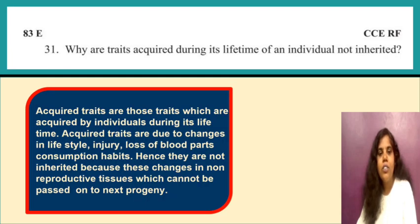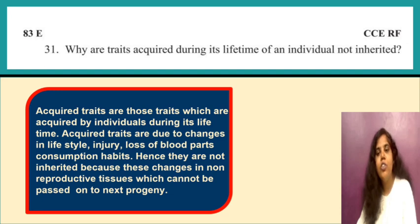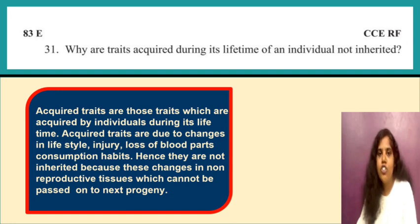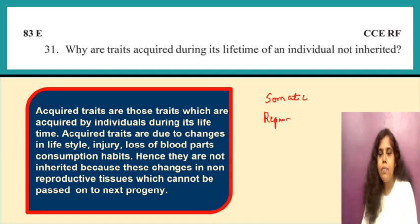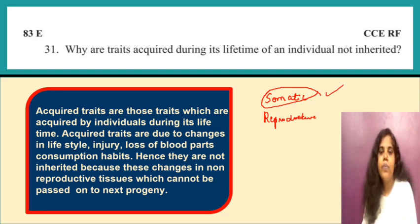Question 31: why are traits acquired during an individual's lifetime not inherited? Acquired traits are those acquired by the individual during its lifetime, due to changes in lifestyle, injury, loss of body parts, or habits. They are not inherited because these changes occur in non-reproductive tissue — somatic cells — which cannot be passed on to the next generation. Only changes in reproductive cells can be inherited.